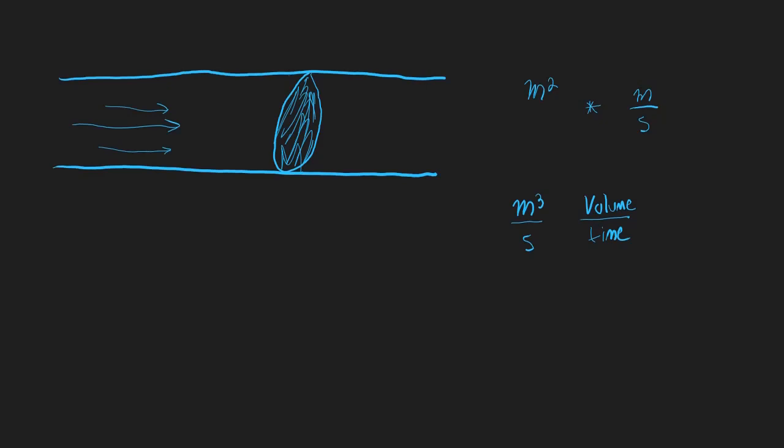So we know what volume flows through an area per second. The equation for volume flow rate is Q, which is measured in meters cubed per second, equals velocity of the given fluid, measured in meters per second, times the cross-sectional area of the pipe or vessel, measured in meters squared.